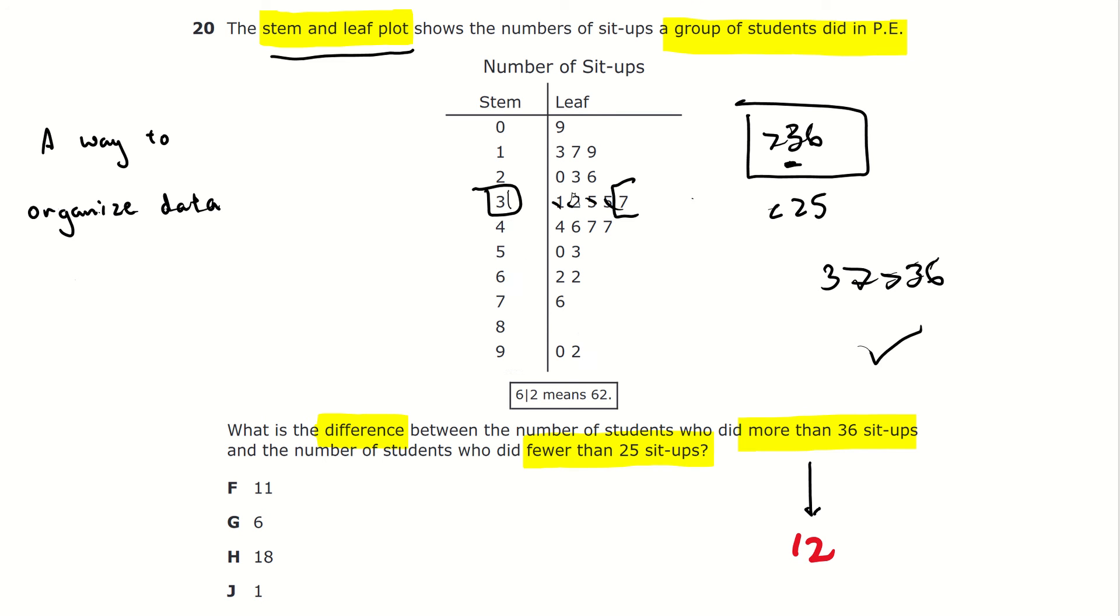Now, using this same process, we can determine how many students did fewer than 25. Same as before, we need to first find our stem, which is 2. Using that, we need to look at the stem of 2 on the stem and leaf plot. Same as before, we need to find a number that is less than 25.